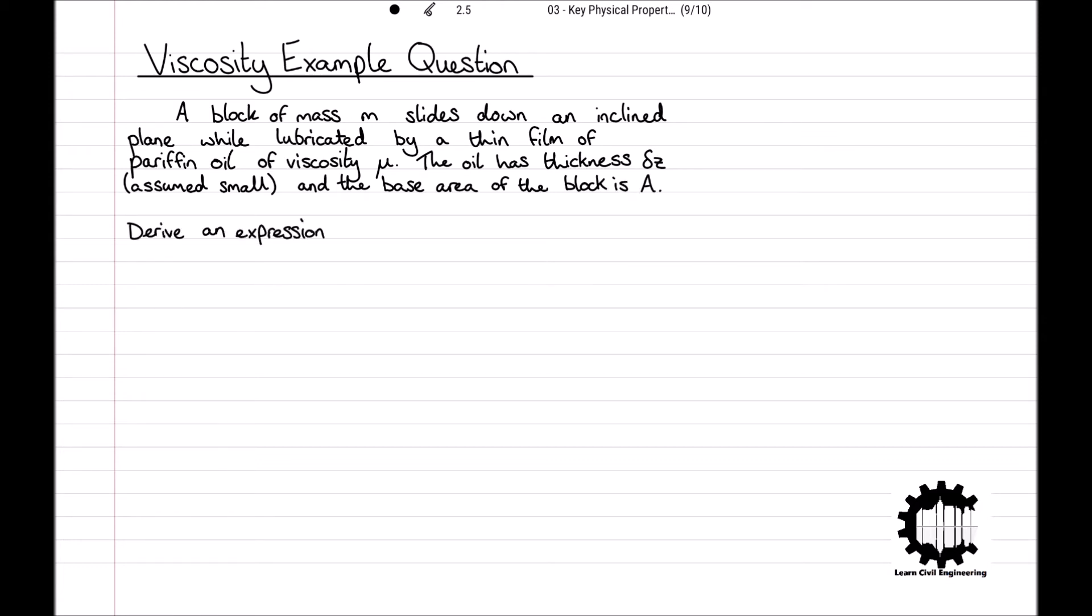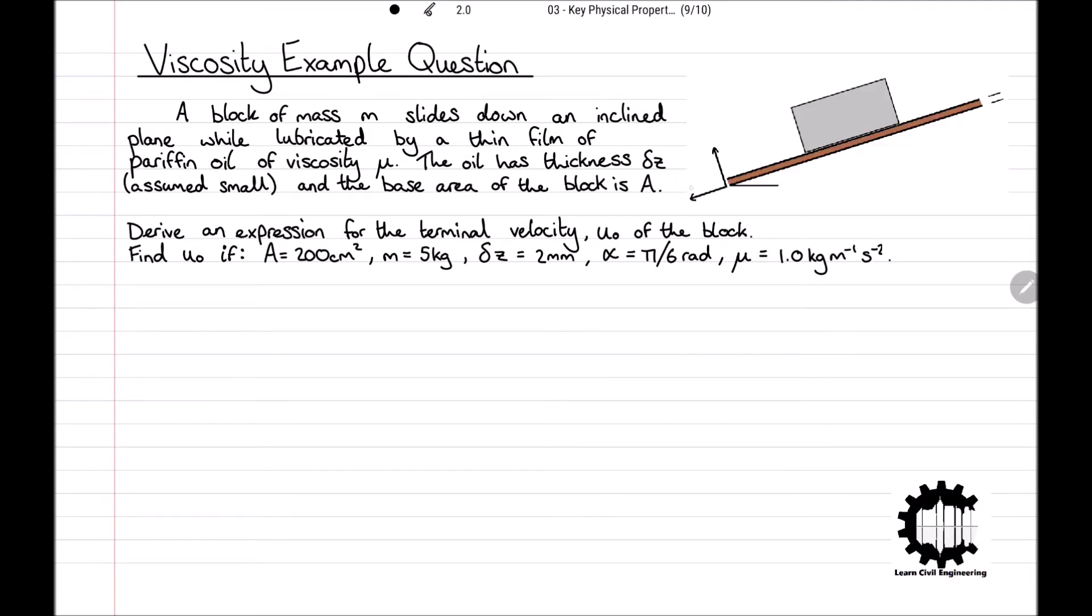Derive an expression for the terminal velocity u0 of the block, and then find u0 if A equals 200 centimetres squared, m equals 5 kilograms, delta z equals 2 millimetres, alpha equals pi over 6 radians, and mu equals 1.0 kilograms per metre per second. Pause the video here and have a go at this question, applying the theory we have just learnt.